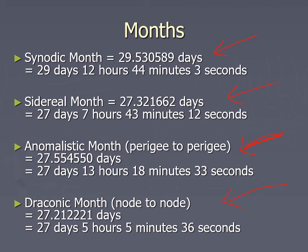The moon crosses the ecliptic about every 27.2 days, but the new moon repeats about every 29 and a half days. So that means they don't quite line up — they sometimes line up, but then they don't line up again the next month. If you get a solar eclipse one month, you cannot get another solar eclipse the next month.